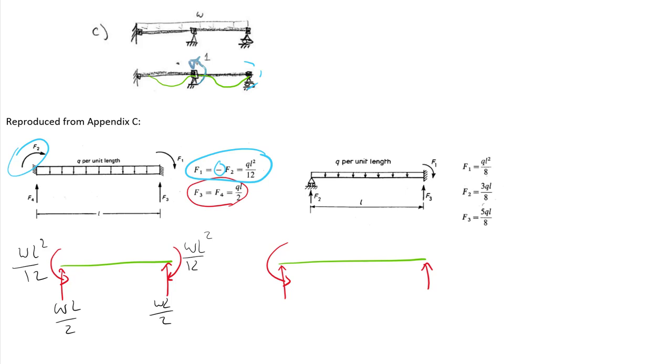On the right-hand member, we have a value of moment WL squared over 8. And the shears, F3 corresponds to the side that has the moment. That's 5 WL over 8.